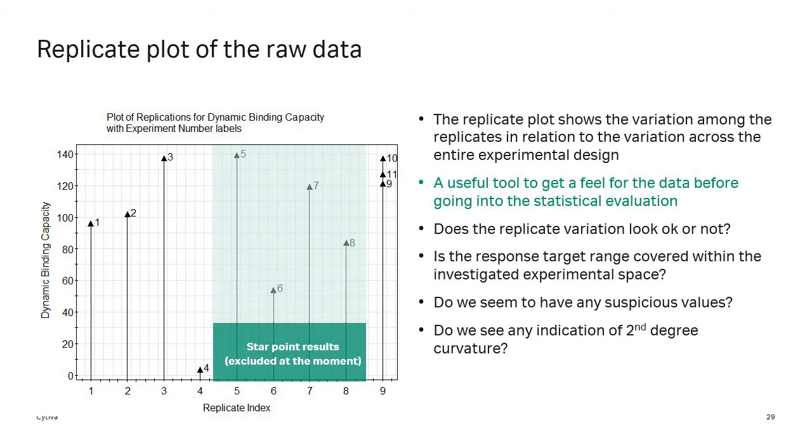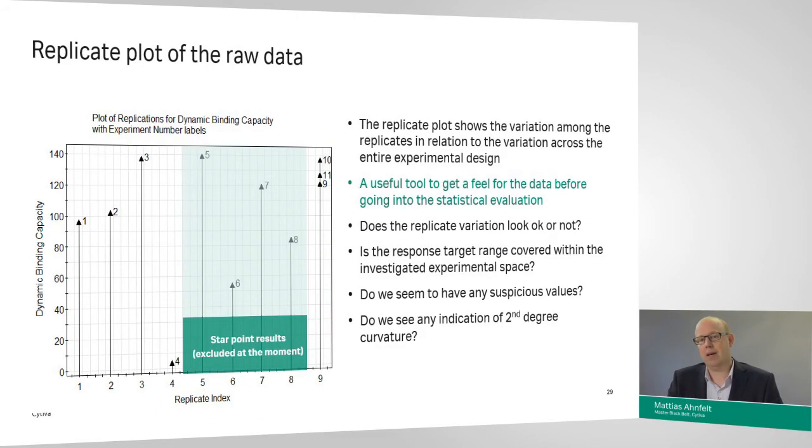So, that's exactly what we'll be doing. But before we go into the DOE modeling and transfer functions and statistics and everything, we'll just look at a replicated plot of the raw data. Looking at your raw data is often a very good idea before diving too deep into statistics and number crunching. What we see here, what we look for primarily is some key features. We look at the variation in our replicated center points, which is what you have on the farthest to the right part of this graph. You'll see three points sitting together at around 120, 130, 140 in dynamic binding capacity.